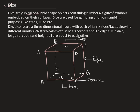Dice are cubical or cuboid shaped objects containing numbers, figures and symbols embedded on their surfaces. Dice are used for gambling and non-gambling purposes like craps, ludo, etc.